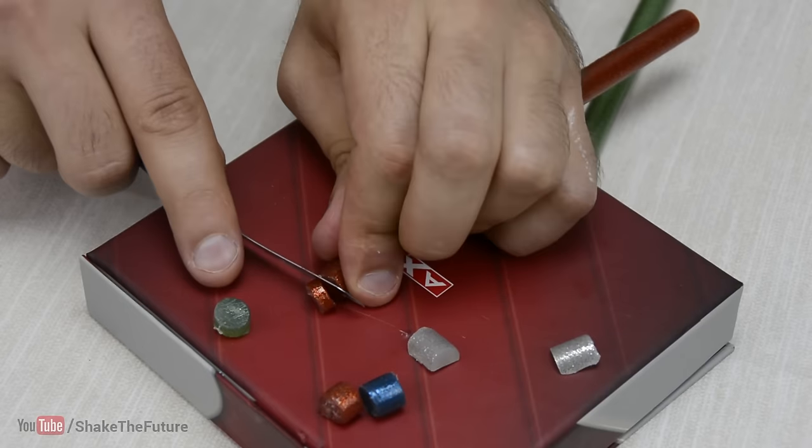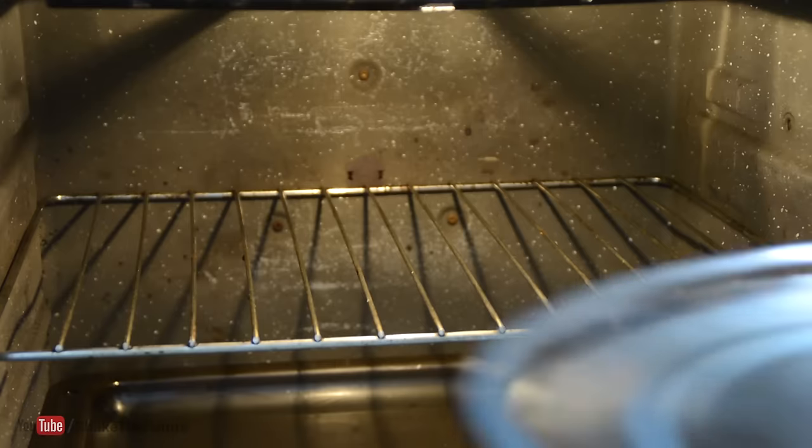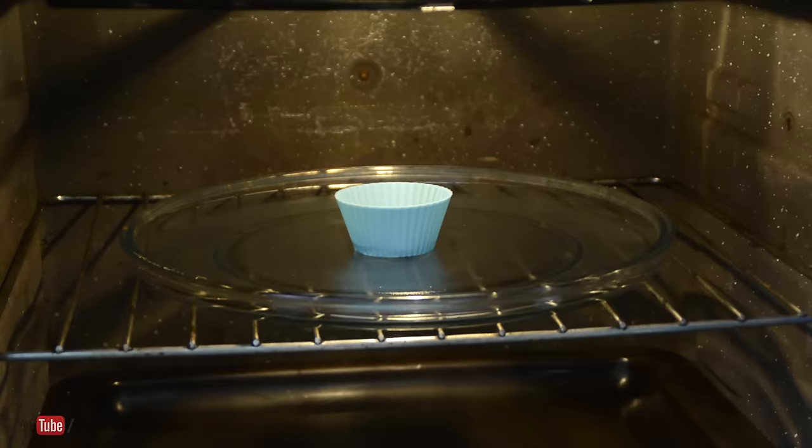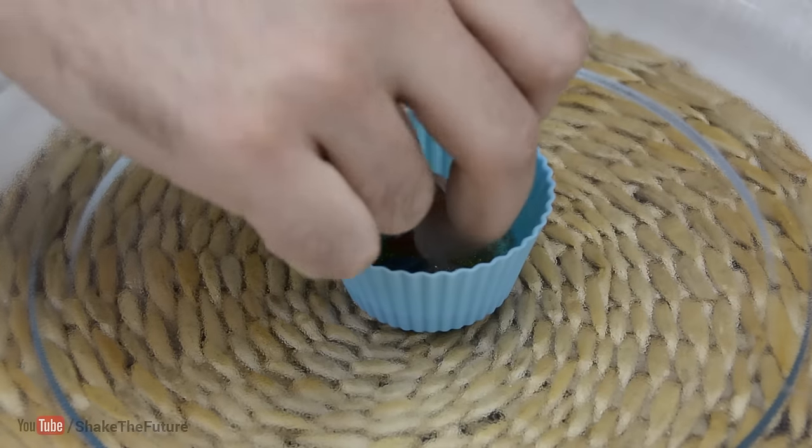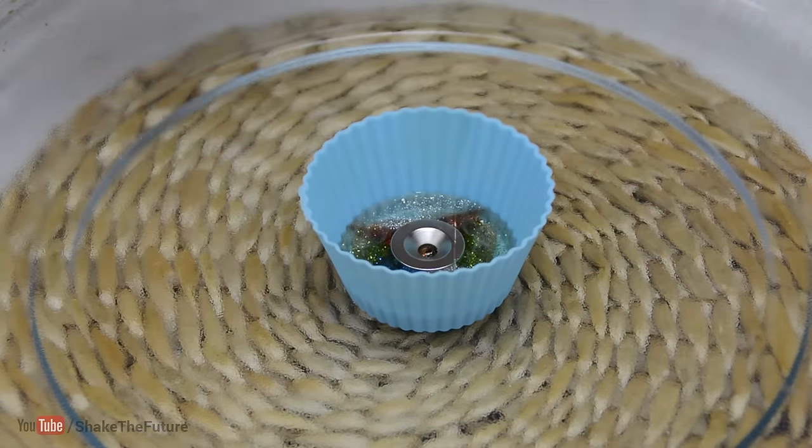Now cut some more glue and put it on top. Take the mold back to the oven. When the glue has melted, put a magnet in the center. Now wait until it cools down.